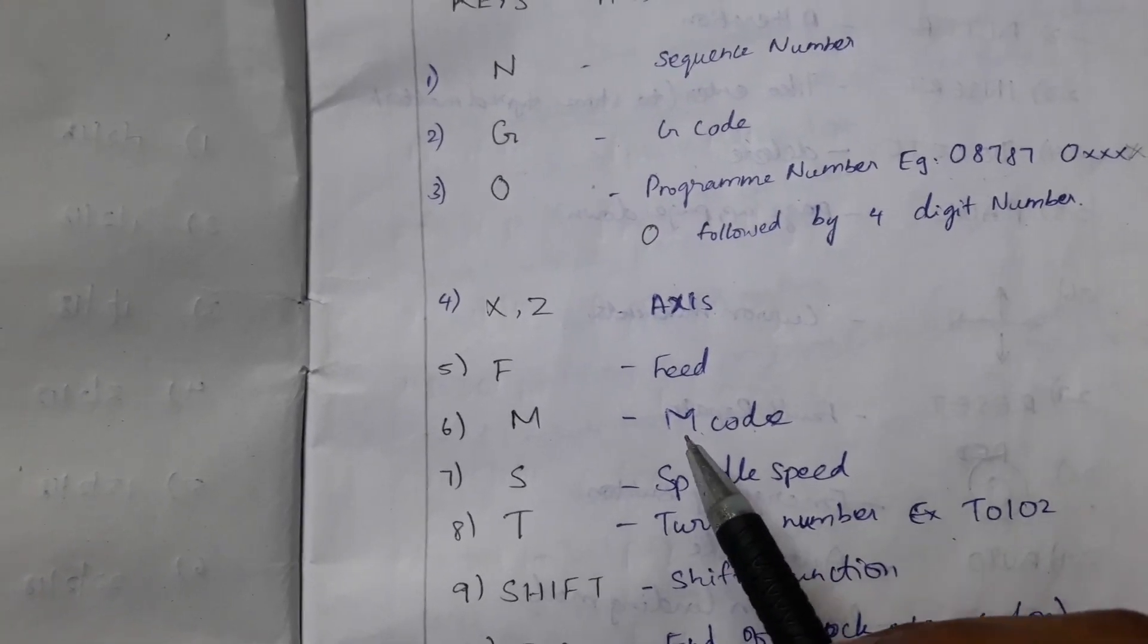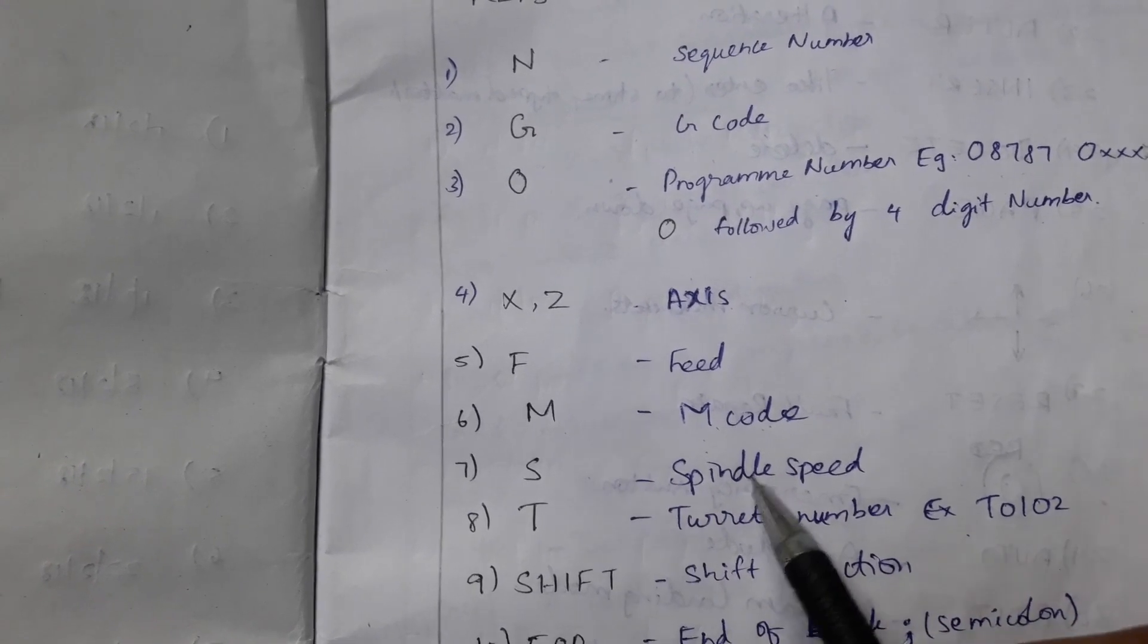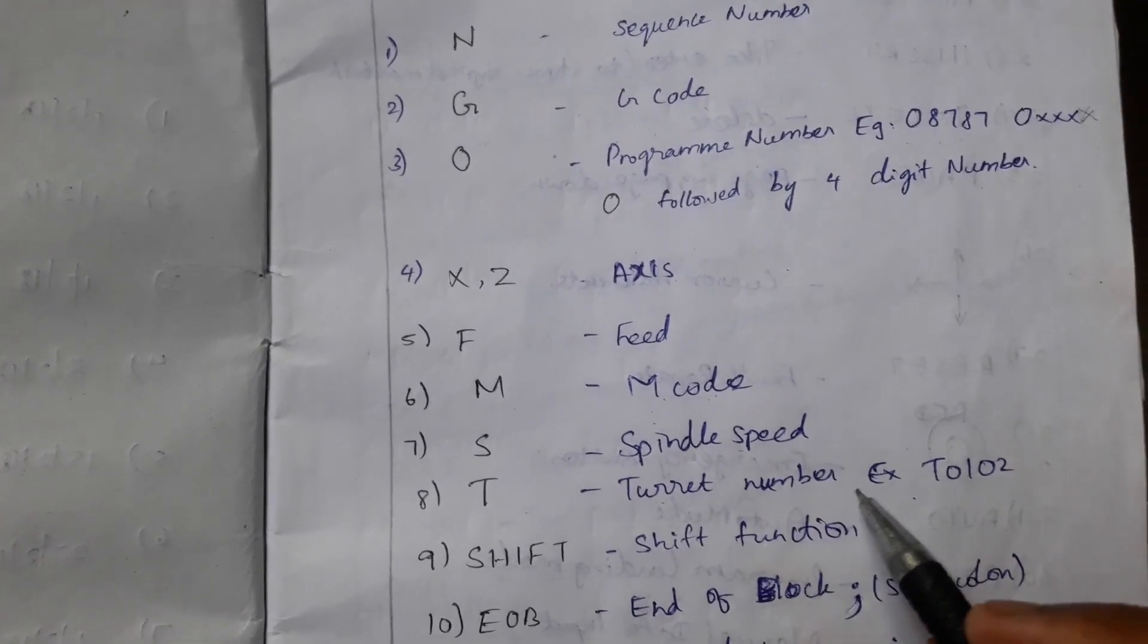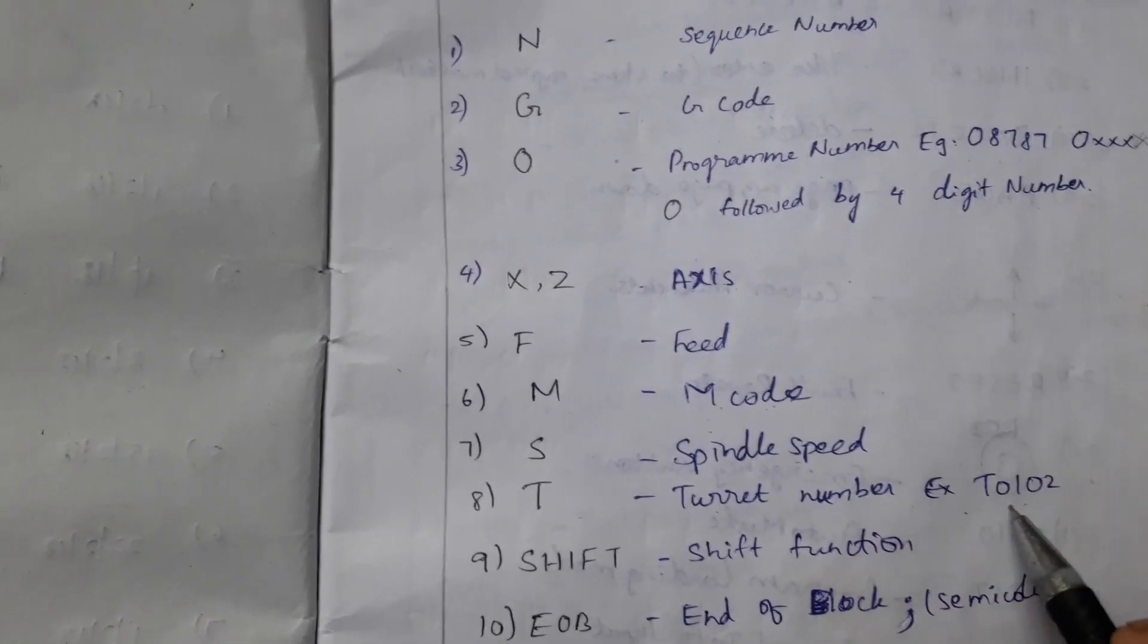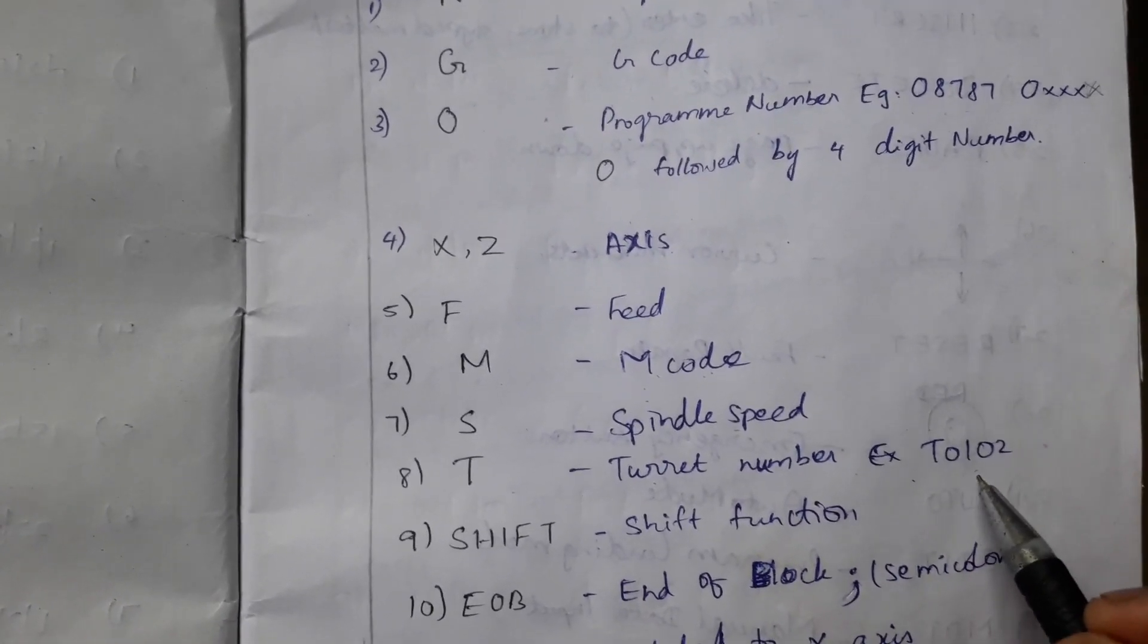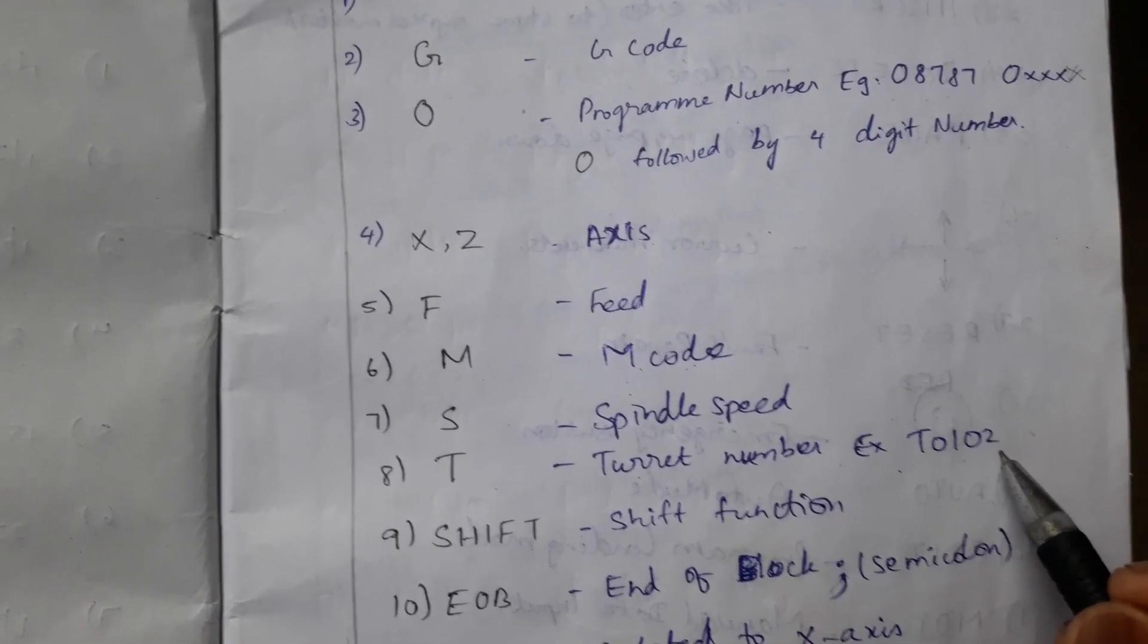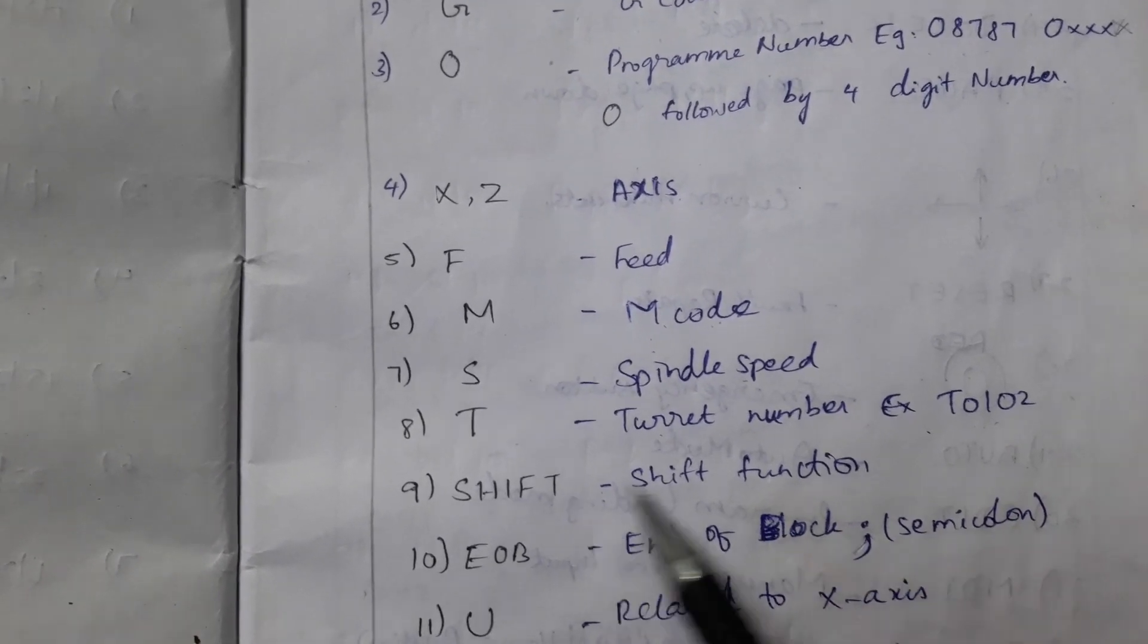S is spindle speed. T, turret number. Turret number followed by four digits. The first two digits stand for station number and the next two digits stand for offset number. Then SHIFT function, EOB, that is end of block, a semicolon.